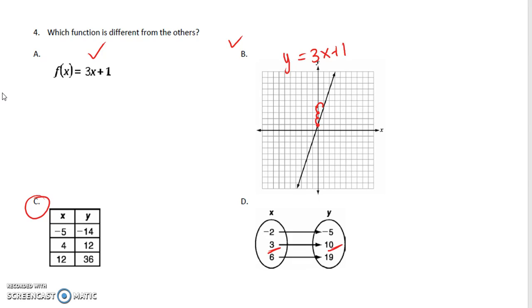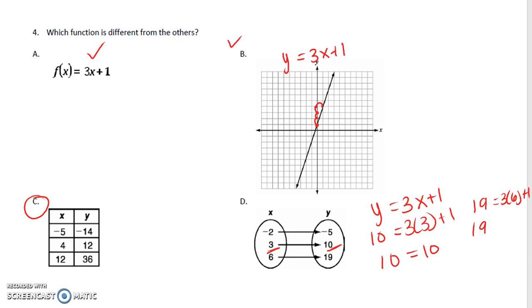If I use that equation and I plug in 10 for y and 3 for x, both sides are equal. If I plug in 19, all of these coordinates work. So A, B, C, and D are all the same.